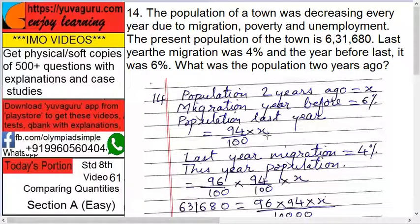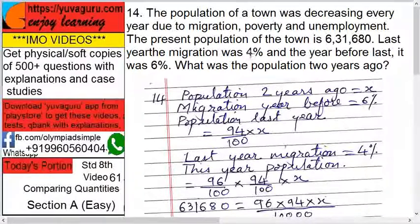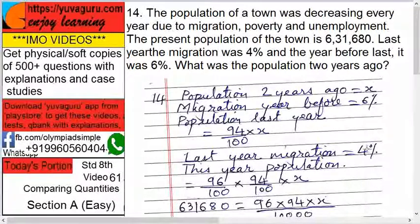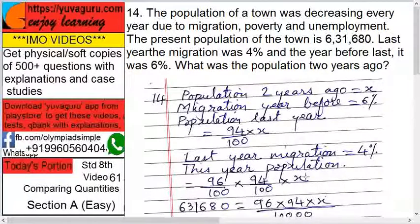So 94 upon 100 into X — this is the population last year. Now last year's migration was 4%, so it will decrease by 4%, meaning 96 upon 100. 100 minus 4 is 96, so 96 upon 100 into this population, which is 94 upon 100 into X.